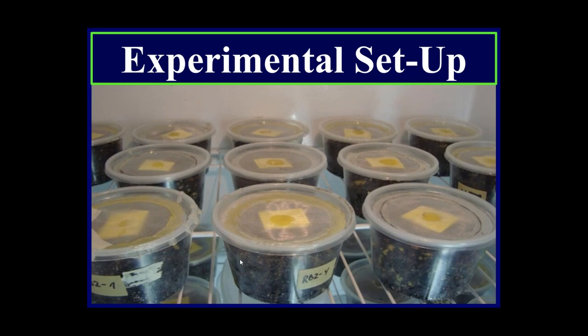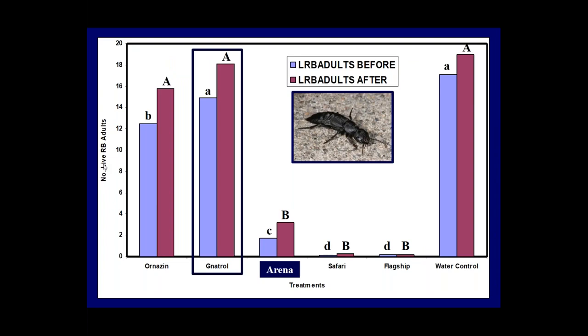Here's how we conduct these experiments. We use deli squat containers — about 473 mL, roughly the same size as a four-inch pot — filled with growing medium inoculated with rove beetle adults. We make our treatment applications and place yellow sticky cards on top to capture adults. Then graduate students remove all the growing media and count the number of live rove beetle adults. The y-axis is always number of live rove beetle adults (0–20); the x-axis is treatment.